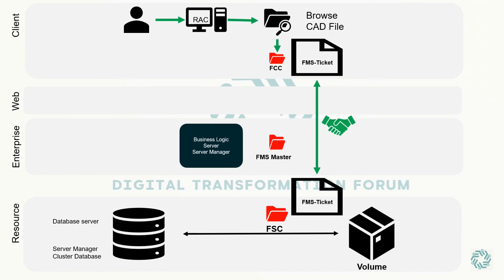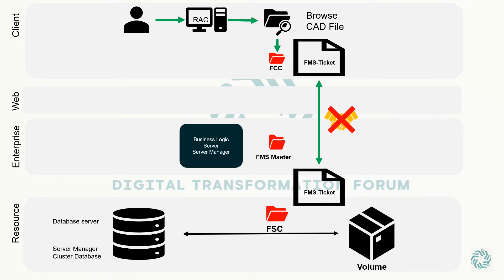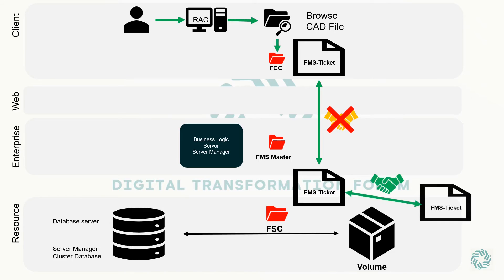We will now consider the final scenario: before the user accessed the data, someone else has modified it. Now when there is a handshake between the tokens, the validation fails, as the ticket residing in the User Local FCC will not be the same as that of FSC. Hence, the request will move further to the FSC. Here, the same mechanism kicks in — that is, the FMS ticket validation between FSC and volume server. If this token validation succeeds, then the handshake is successful, meaning that the FMS ticket residing in the FSC is latest and the request can be served by fetching the data from FSC, thereby saving time to fetch the data from the server.